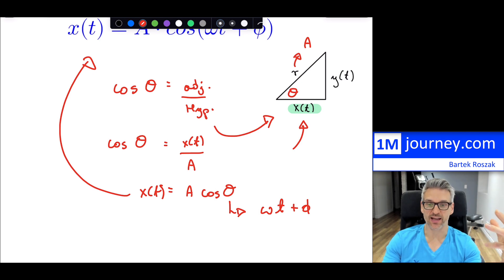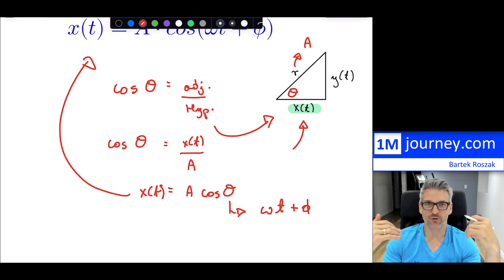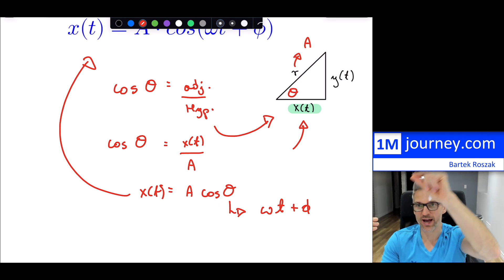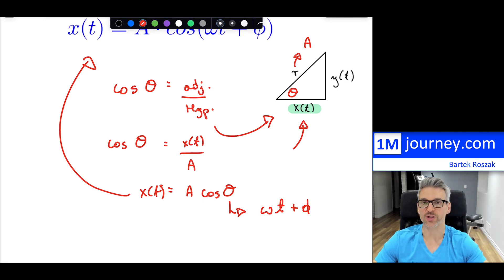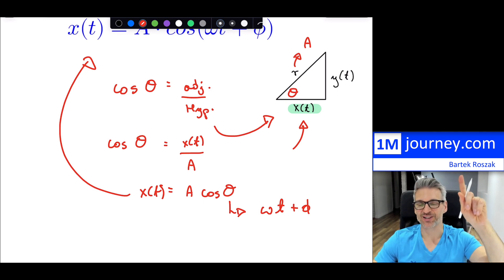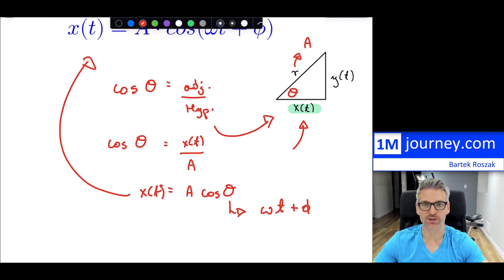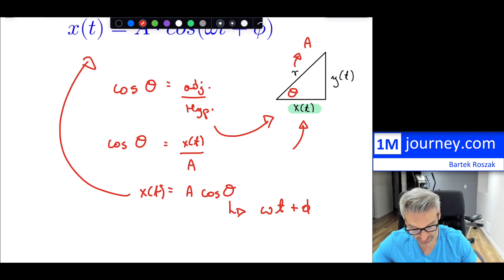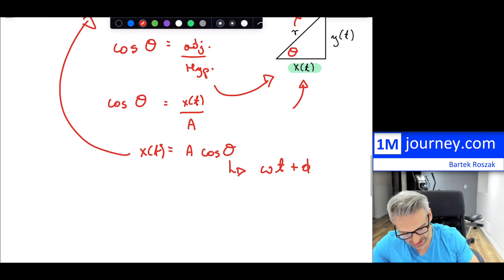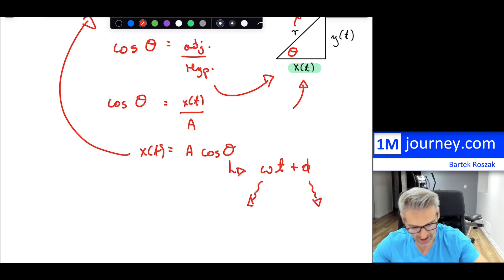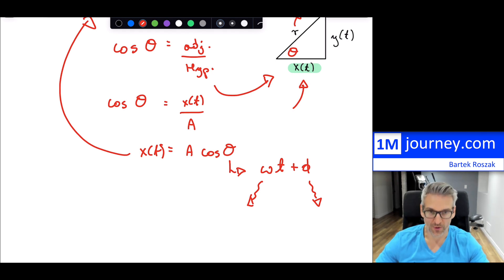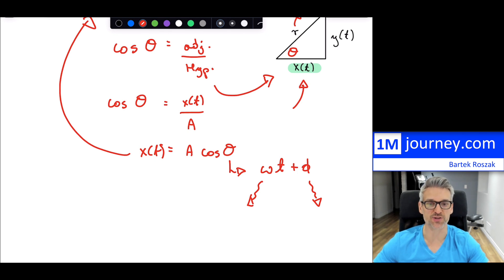Now you have a sense that this equation isn't anything different from what we had for triangles and moving around a unit circle. I'll put a link above for those who want to recall the unit circle. This leaves the question: what exactly is omega, and why do we have phi? Let's first explain phi, which is a little bit easier to explain.